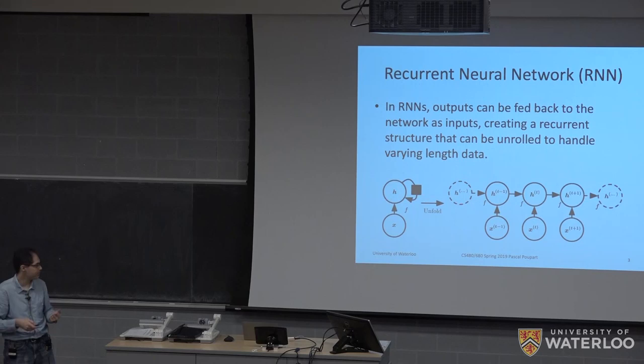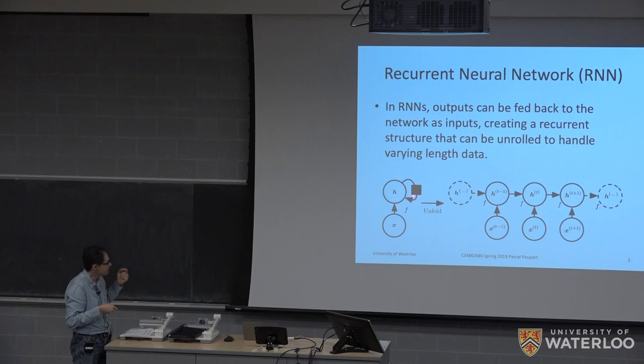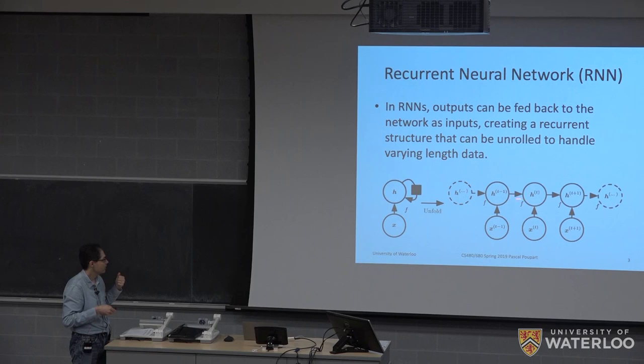In the unrolled diagram, we use the little square to indicate a recurrent arc connecting nodes from different time steps — specifically an arc from h at one step to h at the next step.